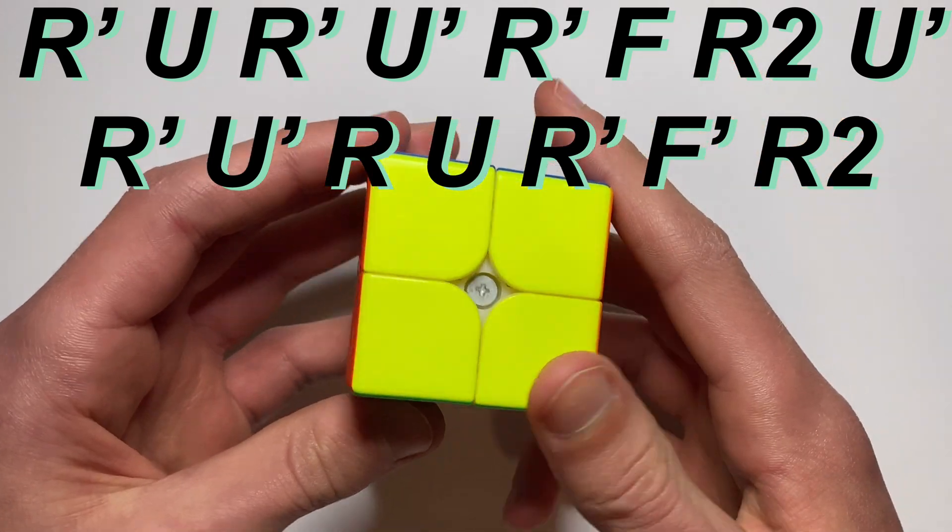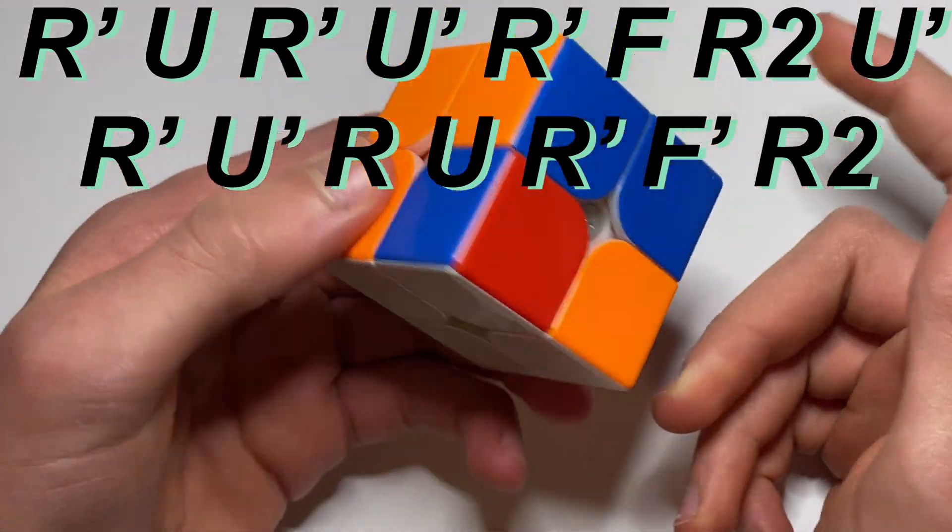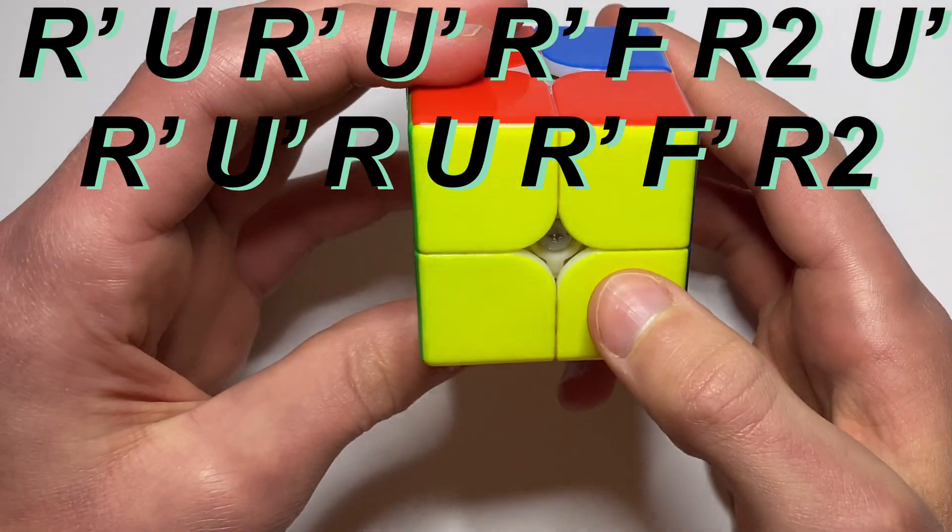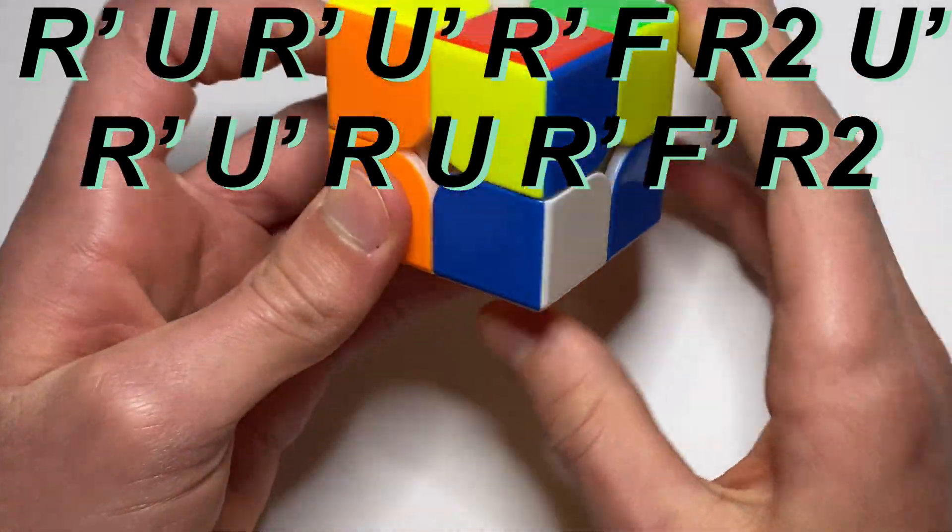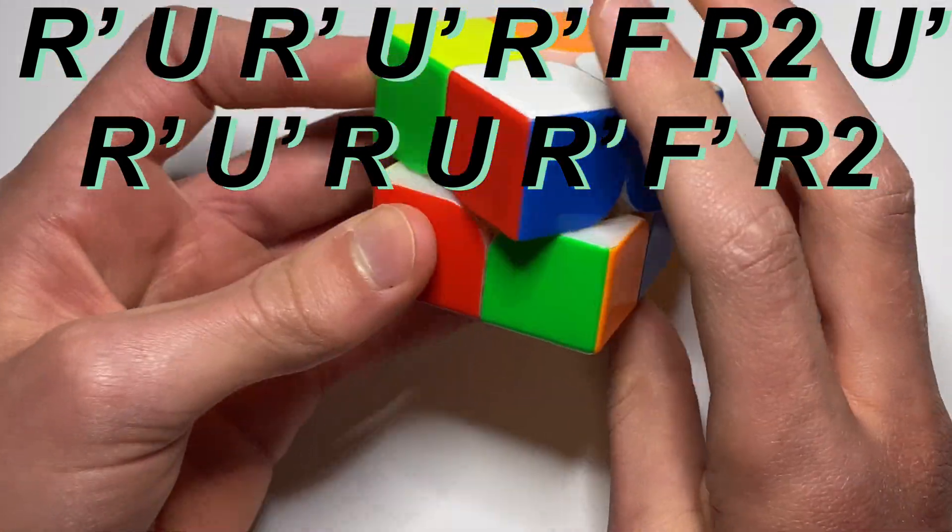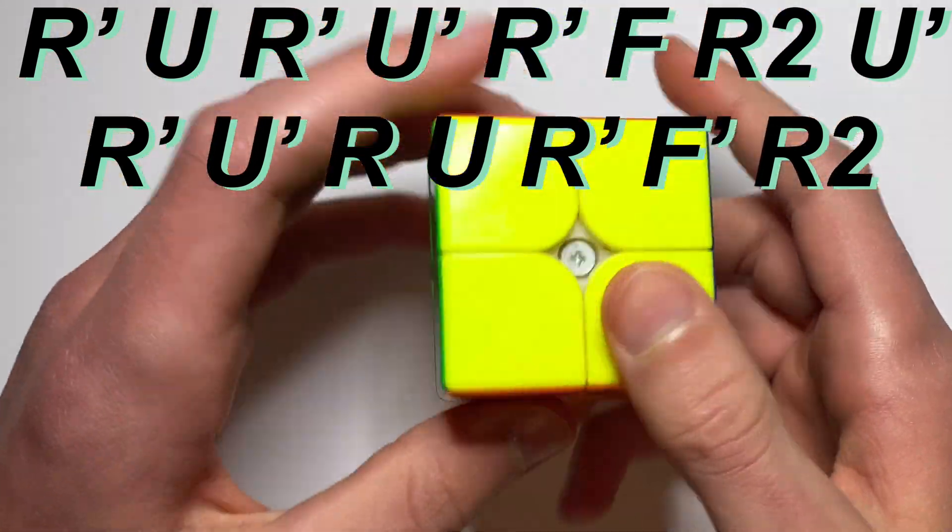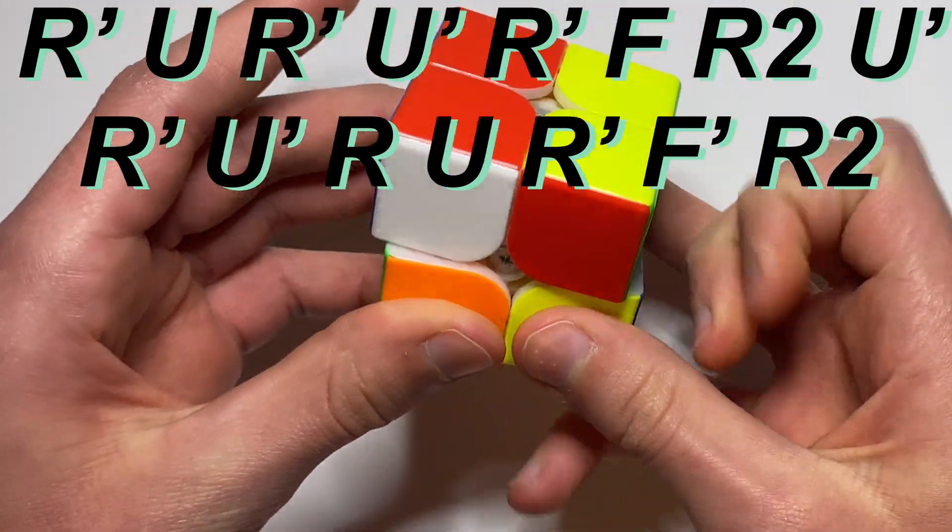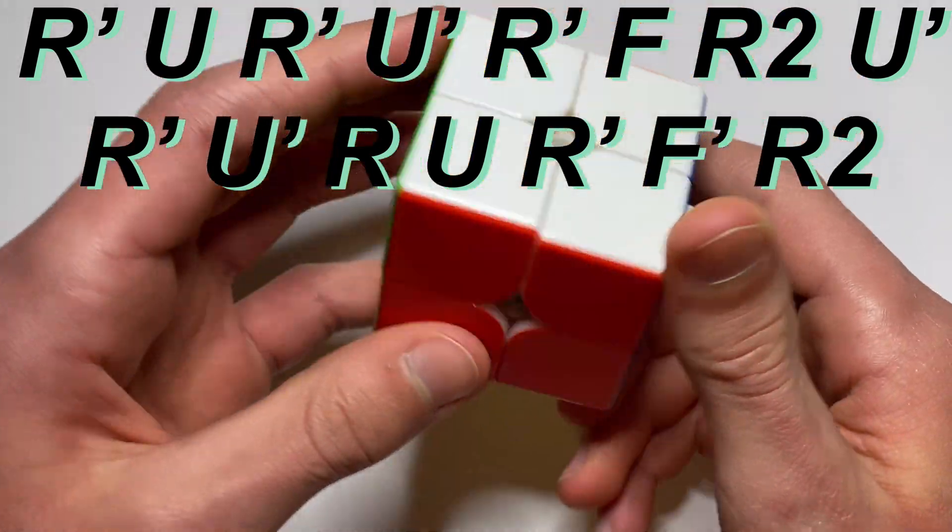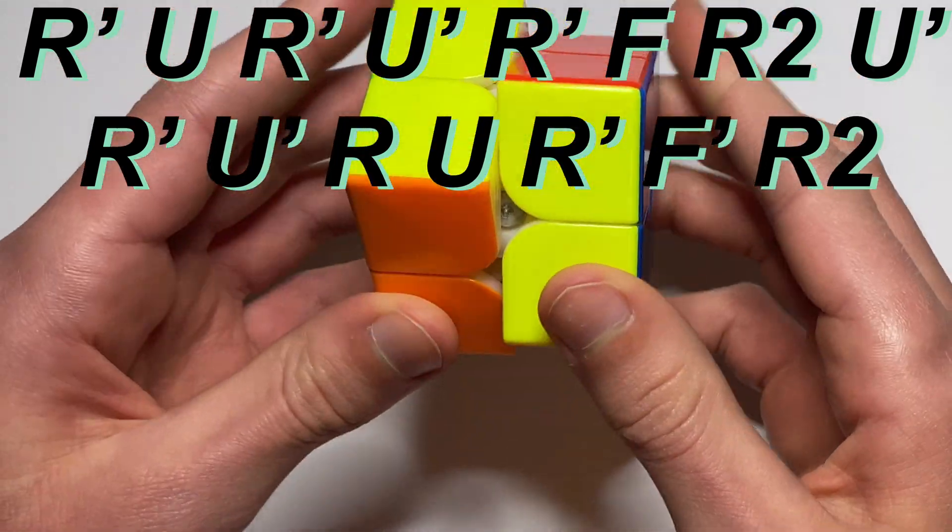But no matter what algorithm you use, you should be using one that's right-handed. You shouldn't be using like an A perm or one of those on 2x2. You should just be using one of the typical ones. So what you do is you just start off with an R prime and you can just do your T perm or whatever permutation you use, and then you just end in an R2. That's pretty much the whole algorithm. It's pretty easy to learn, and then instead of re-gripping and rotating to the bottom, you can just do it from the same grip that you were at.